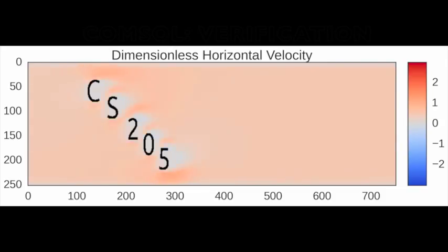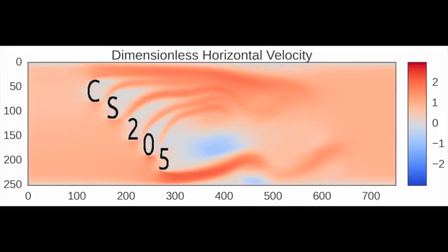The Lattice Boltzmann technique can be used to study flow around weird obstacles as well. Yes indeed! Here we watch a flow develop around CS205 obstacle in a pipe.